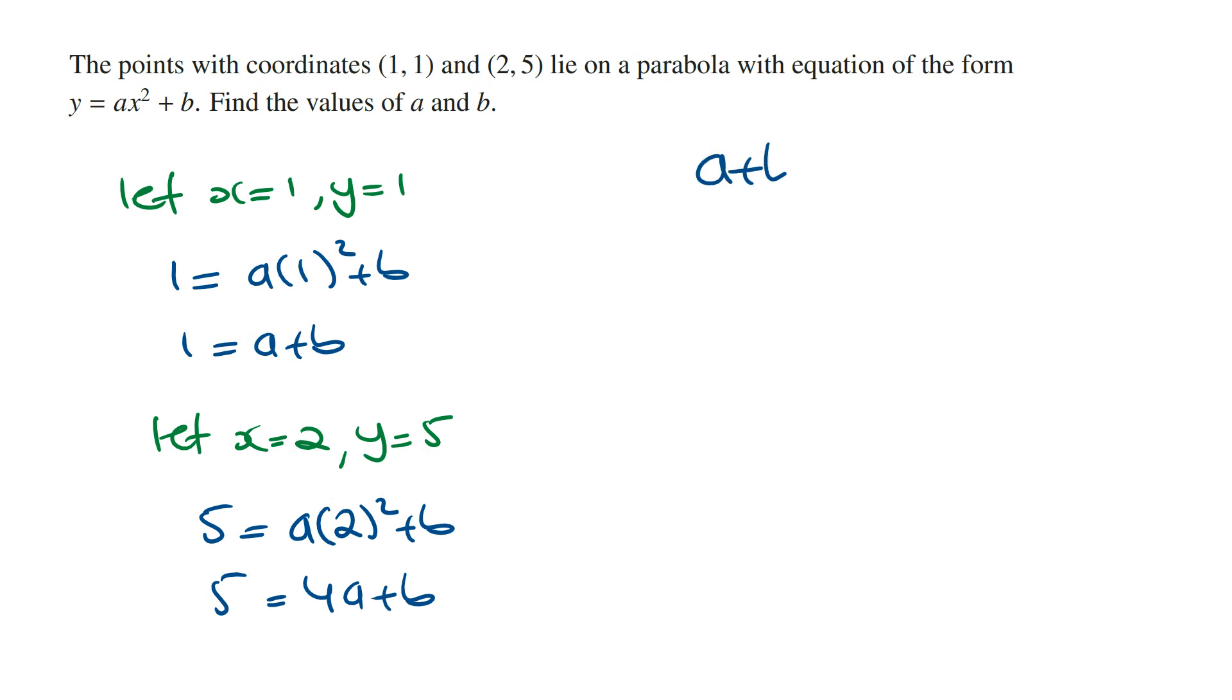So rewriting this, we've got a + b = 1 and 4a + b = 5. So this is our first equation, this is our second equation.